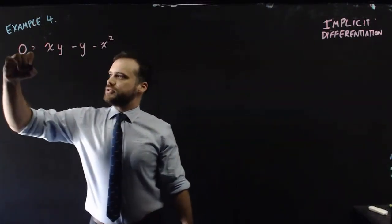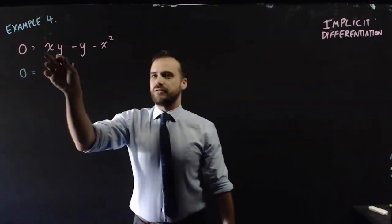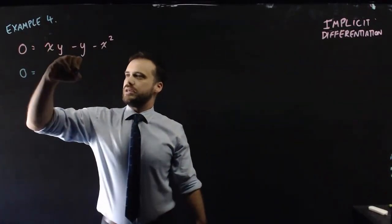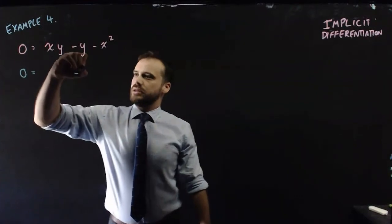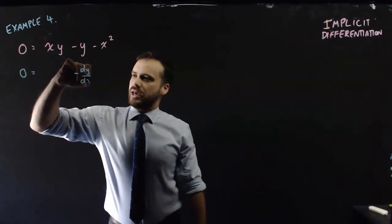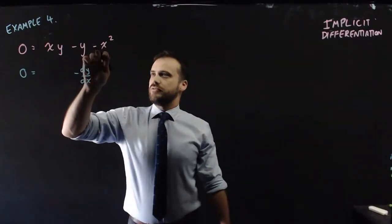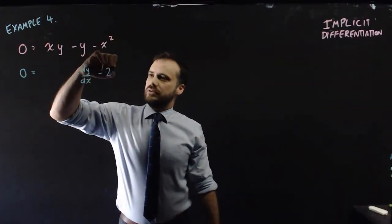Last question here. And this one's really just about rearrangement. The derivative of 0 is 0. The derivative of that, I'll come back to it. The derivative of negative y is negative 1 dy/dx. The derivative of that times dy/dx. And the derivative of negative x squared is negative 2x.